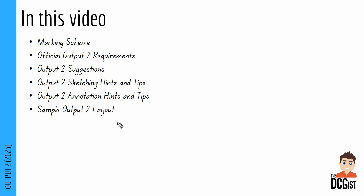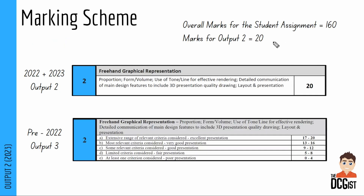Finally, I'll give a sample layout that I would suggest for your output 2. So looking at the marking scheme: overall marks for the student assignment are 160, and the marks for output 2 are 20. When we compare the pre-2022 marking scheme — what used to be output 3 — to the current marking scheme used in 2022 and 2023, you'll see that the amount of marks are the same: it's 20 marks now, it was 20 marks before. The marking scheme now doesn't include quite as much detail, but we can assume the criteria for assessment will be pretty similar.